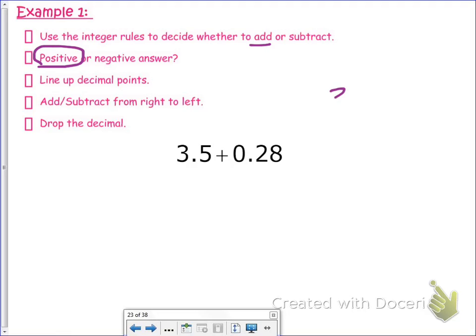So we have 3.5, and then the next step says that we line up those decimal points. This is what it's going to look like: the 0 will line up with the 3, the decimal point will line up here, and then 2 and 8. 8 does not have a number to go with, so we fill in a 0 so that it has a buddy.